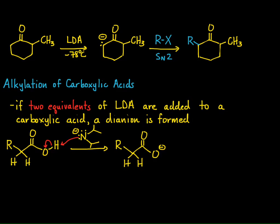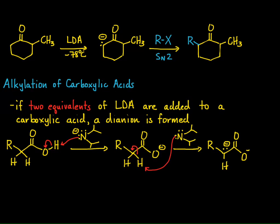Once the carboxylate forms, another equivalent of LDA comes in and can remove an alpha hydrogen to form our enolate. Now we have the enolate — notice this is a dianion because we have an enolate-carboxylate mixture — and we can alkylate it.